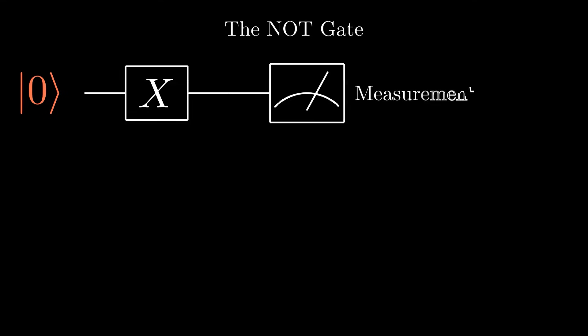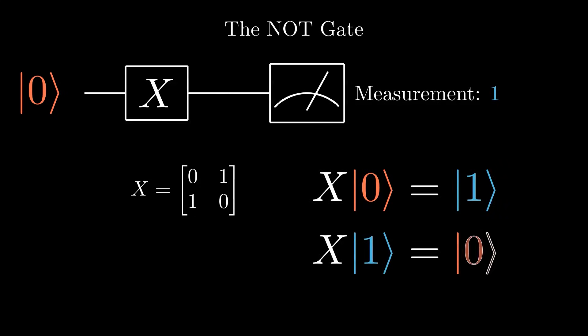There are other useful gates represented as matrices. For example, the NOT gate, which we use the symbol x to represent, is just this matrix. Just like how the classical NOT gate flips a bit, the x gate flips a qubit. We can see it in action working on both the zero-ket and the one-ket mathematically.